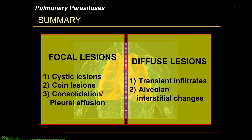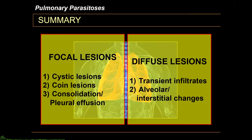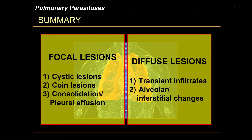In summary, the clinical approach to pulmonary parasitosis covers two major classifications: focal lesions and diffuse lesions. Focal lesions include cystic lesions such as echinococcus, coin lesions such as dirofilariasis, consolidation and pleural effusion exemplified by pulmonary amoebiasis, and the lung fluke Paragonimus westermani. Diffuse lesions include transient infiltrates exemplified by Loeffler syndrome, and diffuse alveolar and interstitial changes exemplified by pulmonary strongyloidiasis, hyperinfection syndrome, and tropical pulmonary eosinophilia. You should be able to include parasitic infections in your differential diagnosis for patients presenting with pulmonary disease.